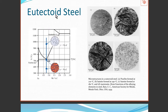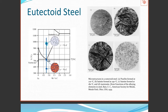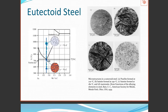A eutectoid steel has a composition of 0.76 percent carbon. When it's red hot it's all gamma. As we start cooling, we approach the eutectoid point at which all the gamma transforms into the micro-constituent — a fine mixture of cementite and ferrite. If we cool slowly we get pearlite; at a different rate we get upper bainite or lower bainite; cool quickly and we get martensite. So the cooling rate determines the resulting microstructure.